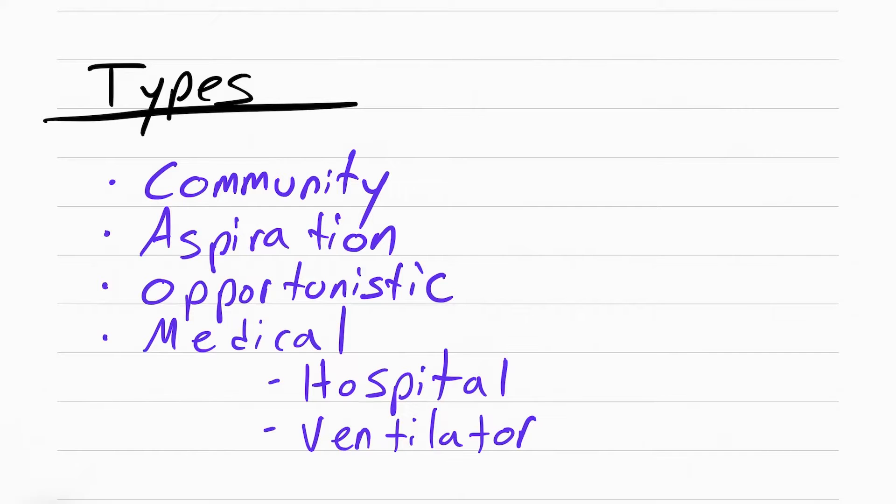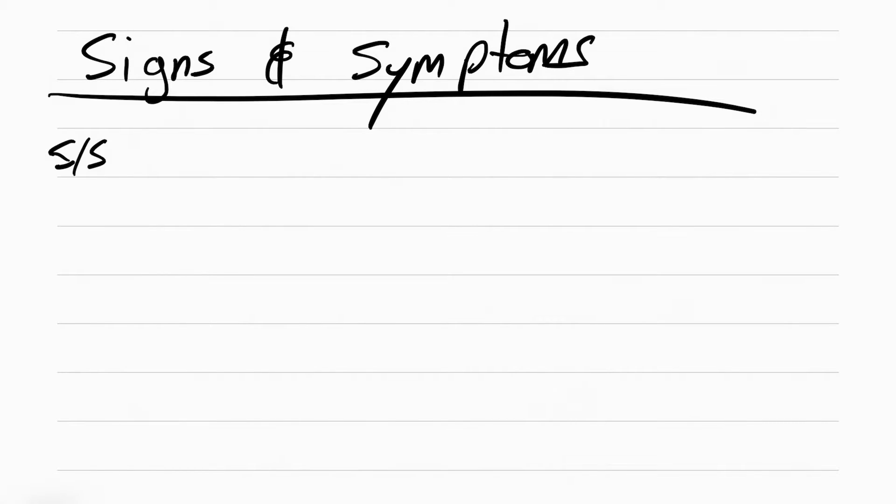Since pneumonia is infection in the lungs, the patient will have signs and symptoms of infection like fever, which is a temperature above 100.4, chills, shortness of breath, and increase in WBCs. Normal WBCs is 5 to 10,000, so it's going to be above 10,000.